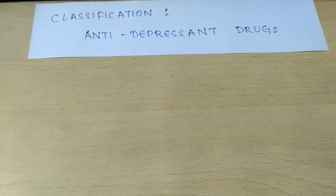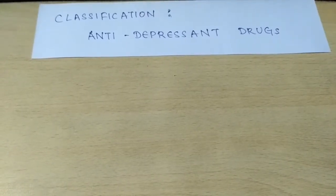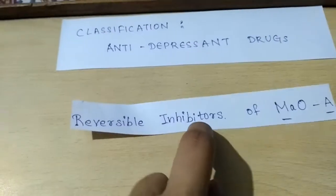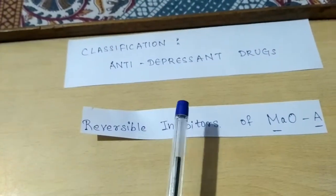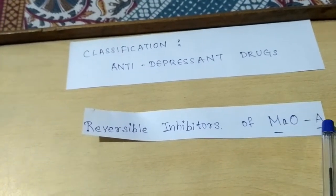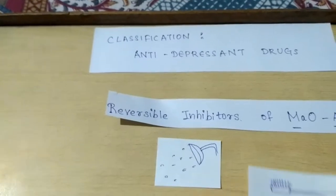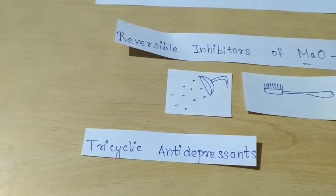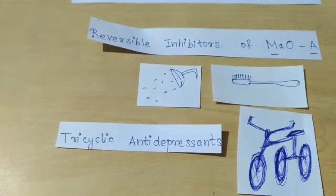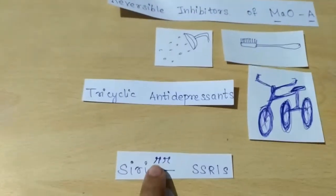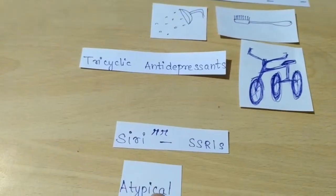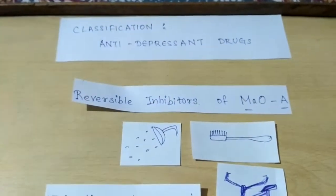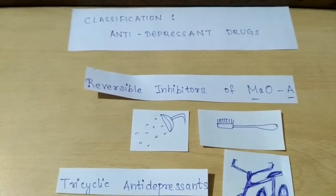Hello friends, in today's video we are going to see the classification of antidepressant drugs. For that, one has to get up in the morning or afternoon, which is a reversible process — reversible inhibitor of MAO. Then take a bath, brush their teeth, go on a ride on a tricycle, ask Siri to play music, and be atypical. Friends, this is the classification of the antidepressant drugs.